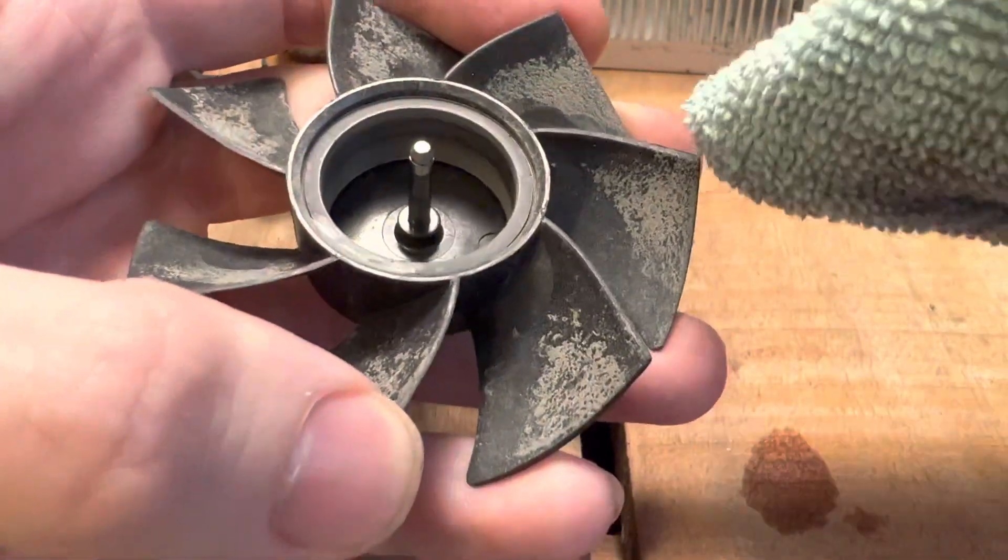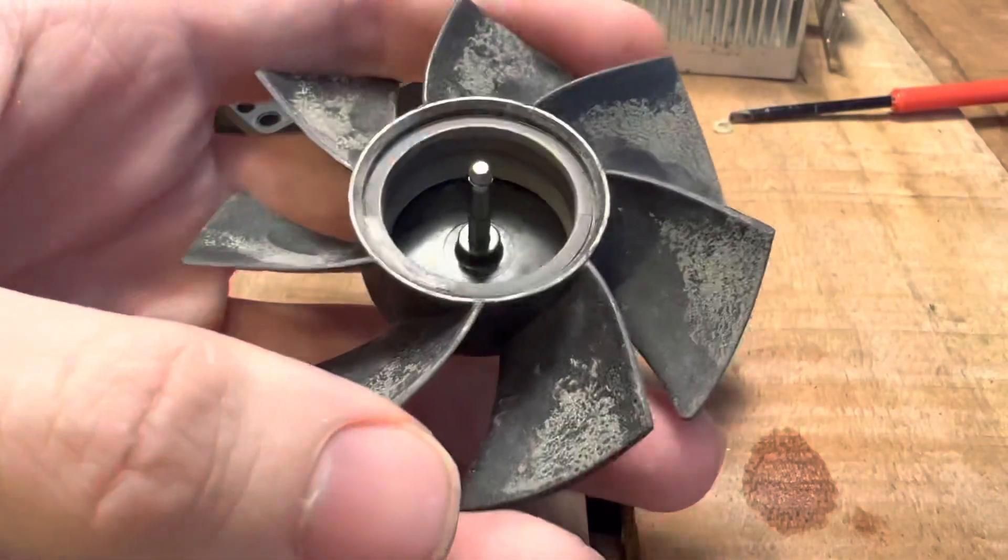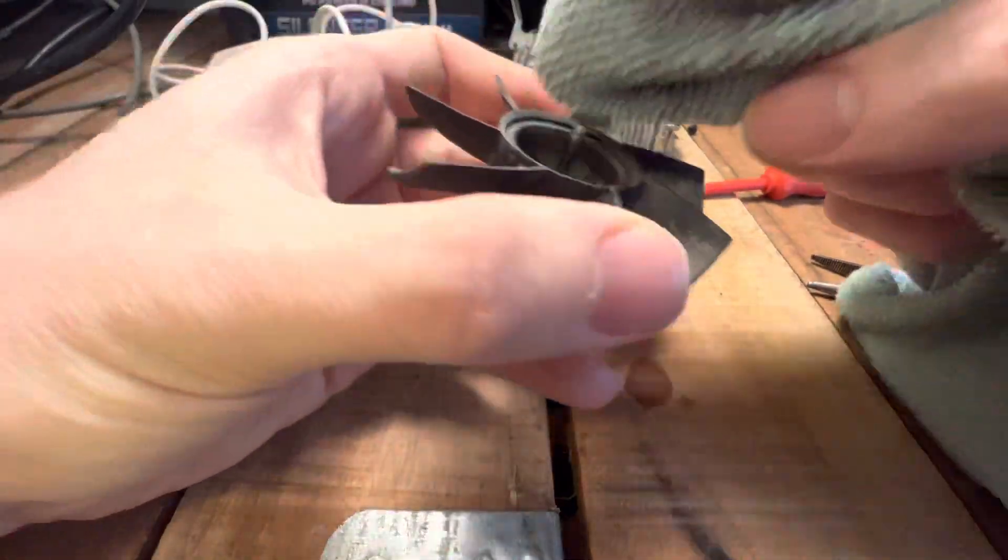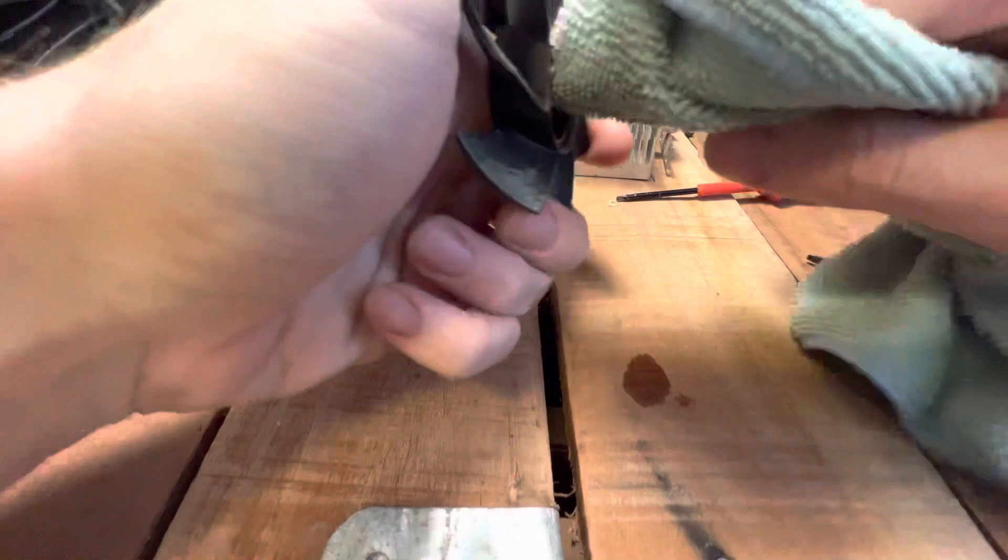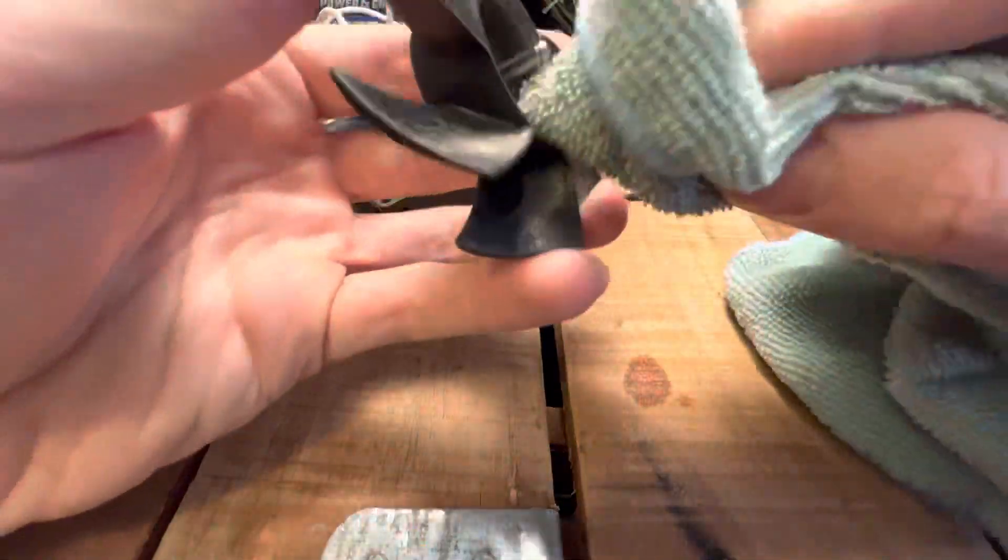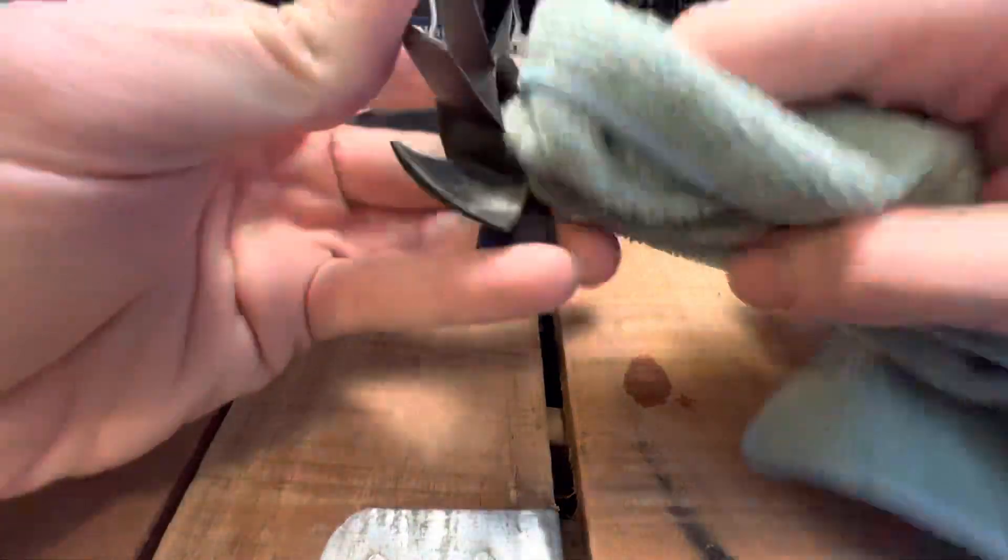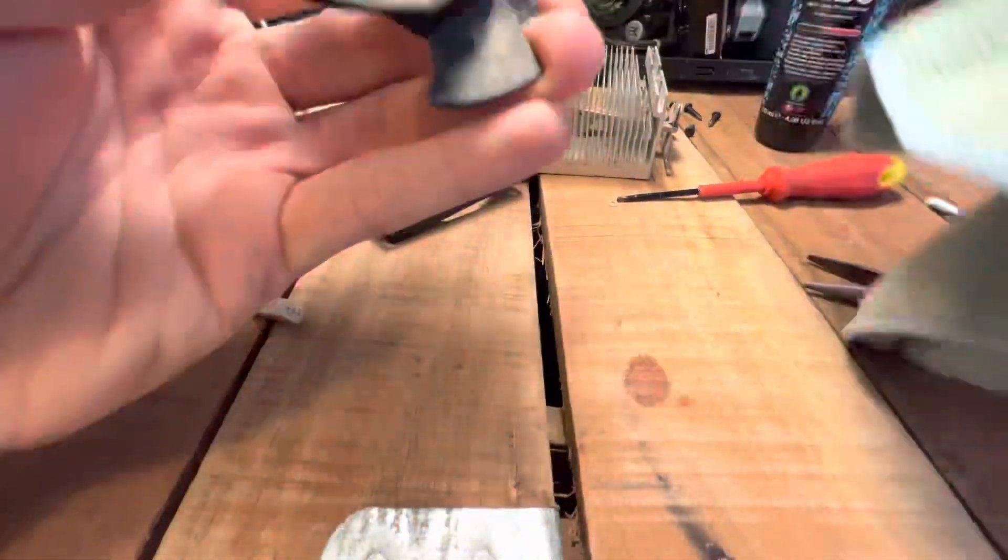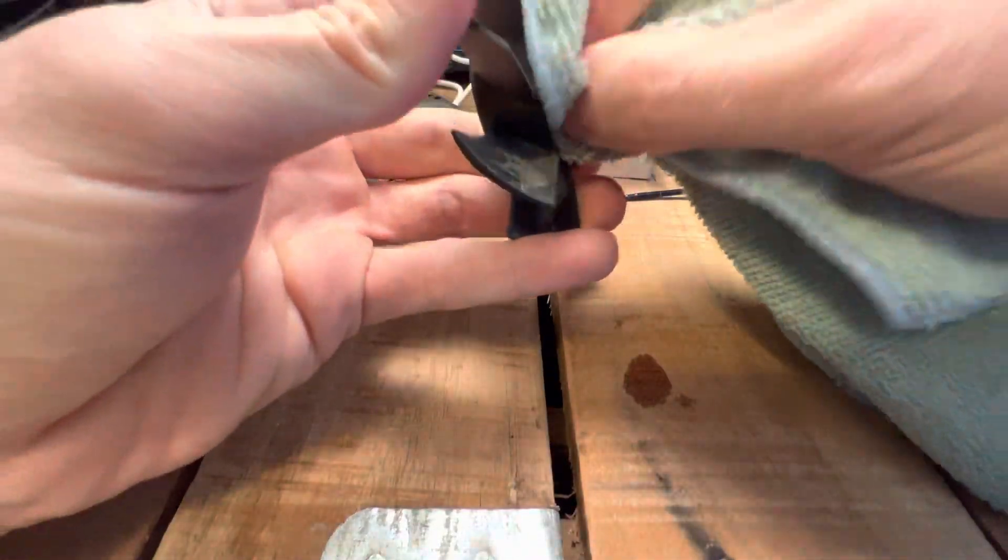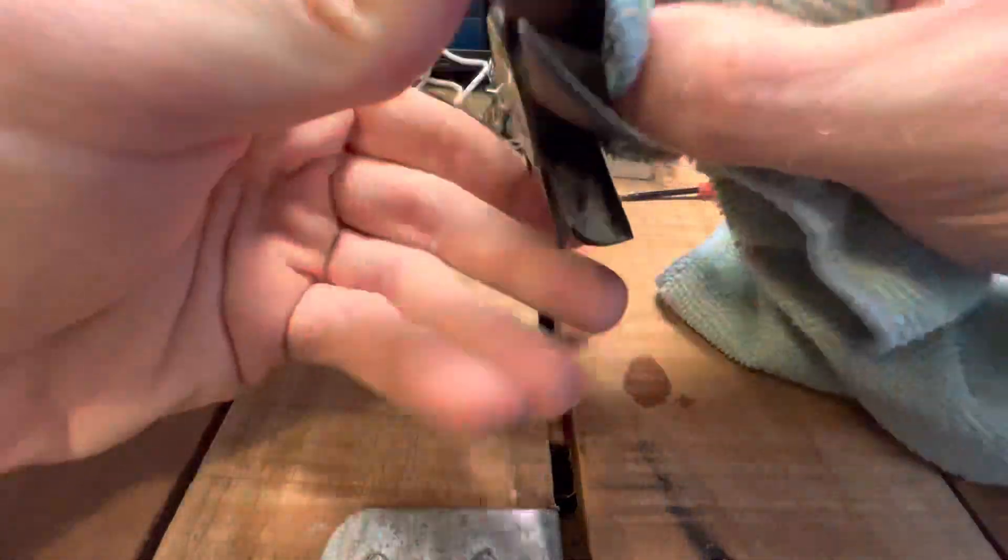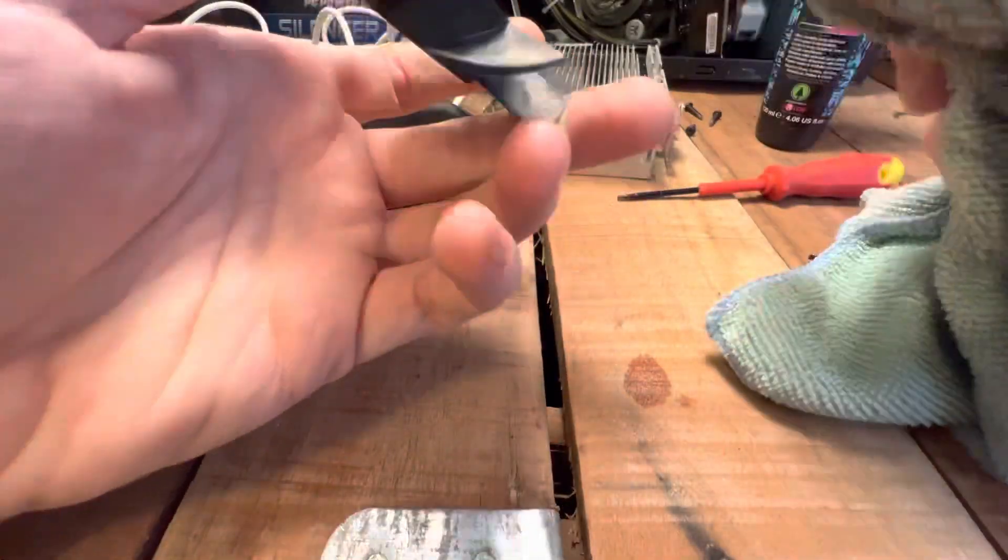Set that aside. Want to clean this up. It's much easier to clean the actual blades of the fans with the blade assembly out. Give the spindle a clean and the magnet inside, because this can accumulate dust - it's not sealed in there.